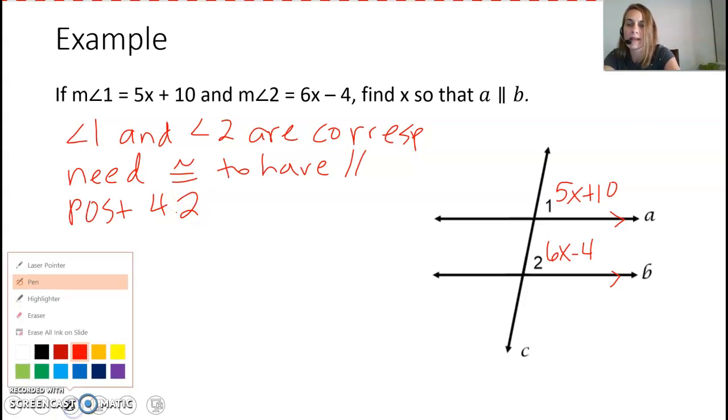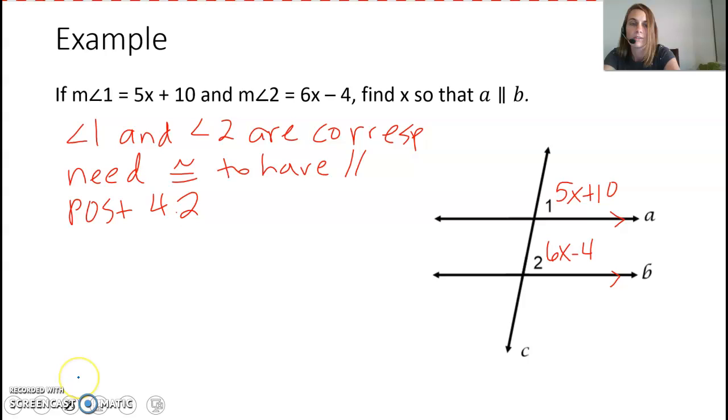So let's go ahead and make them congruent. To make them congruent, that means that their angle measures must be equal. So 5x plus 10 must be equal to 6x minus 4. 5x plus 10 is the measure of angle 1. Measure of angle 1 needs to be equal to measure of angle 2, so we set them equal to each other and now we need to solve.